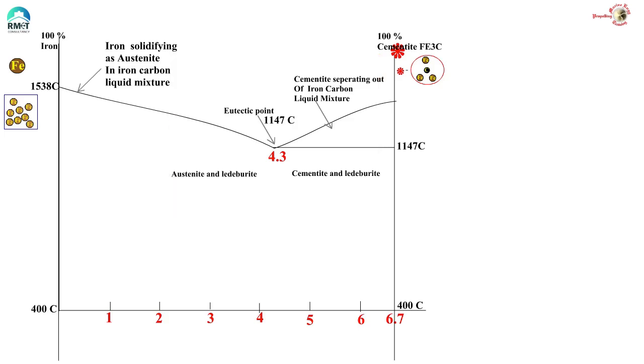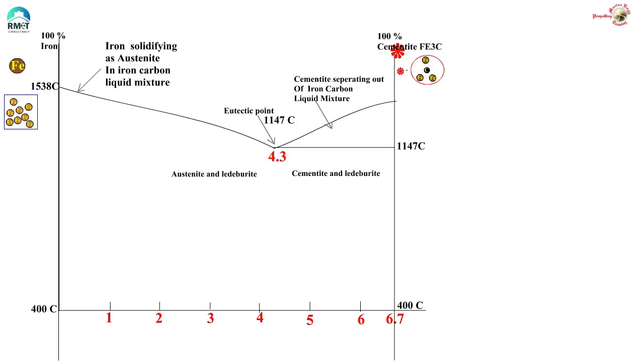We saw in detail the happenings in this part of the iron carbon diagram. Now, in this video, we are going to continue to cool iron to room temperature and also see what happens if carbon atoms are present. We will further proceed to understand this part of the iron carbon diagram.